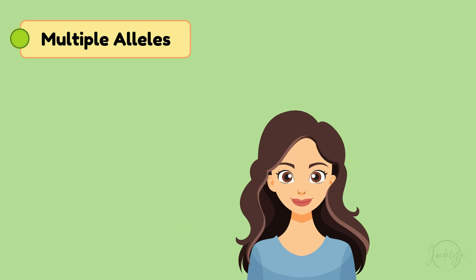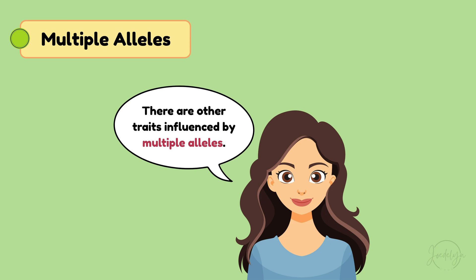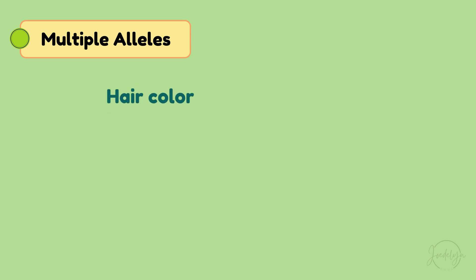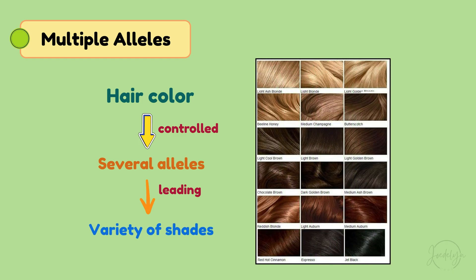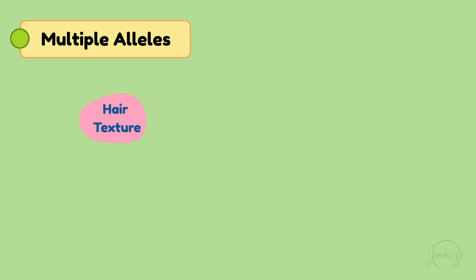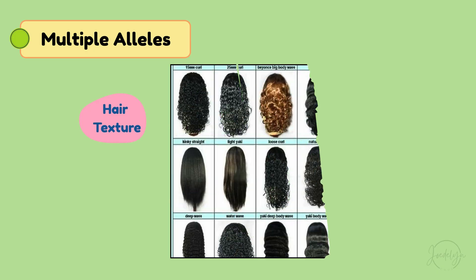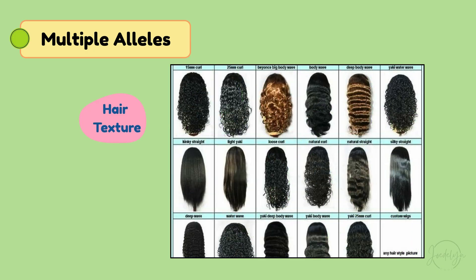In addition, there are other traits influenced by multiple alleles. For instance, hair color is controlled by several alleles, leading to a variety of shades from blonde to brown to black and even red. The texture of hair — whether it's straight, wavy, or curly — can also be influenced by multiple alleles interacting.